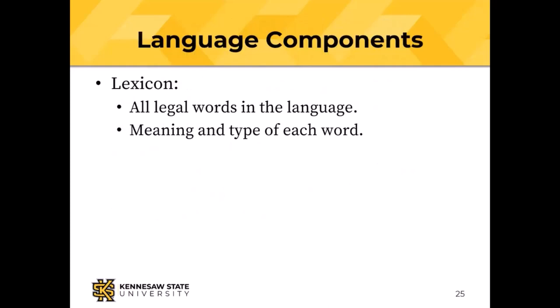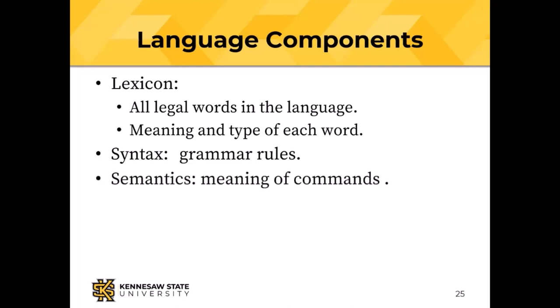Language components: a lexicon is a list of all the legal words and the meaning and type of each word in the language. Syntax is the grammar rules — how you can arrange those words. There is a syntax for English too, though we rarely think about it. Yoda mangles the syntax of English just enough to sound weird but be recognizable. Semantics are the meanings of the words.